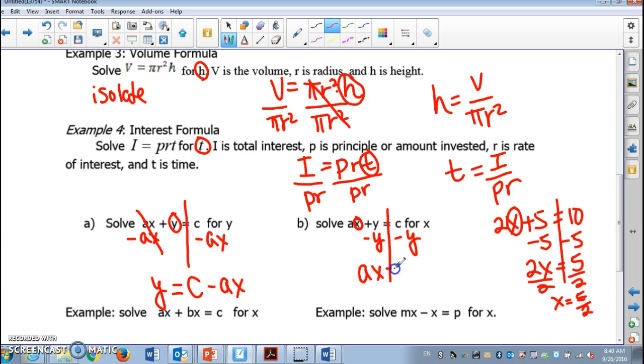AX equals C minus Y. Then we're almost done. X is not by itself. We need to get rid of A. Since it's multiplication, we are going to divide by A. So X equals C minus Y all over A.